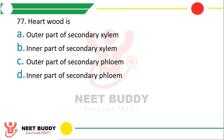Question number 77. Heartwood is: outer part of secondary xylem, inner part of secondary xylem, outer part of secondary phloem, or none? The correct answer is option B — inner part of secondary xylem.